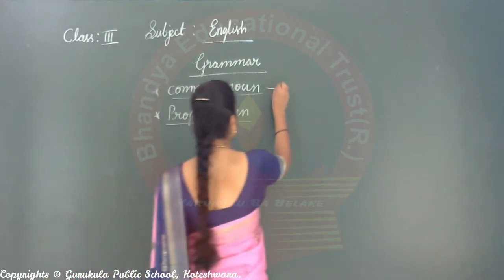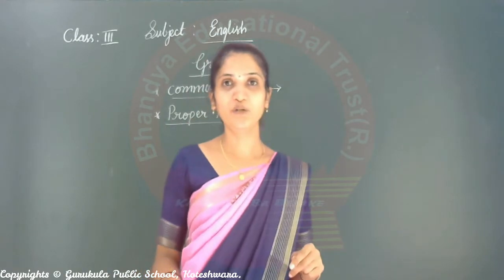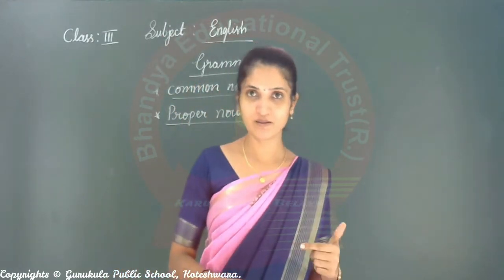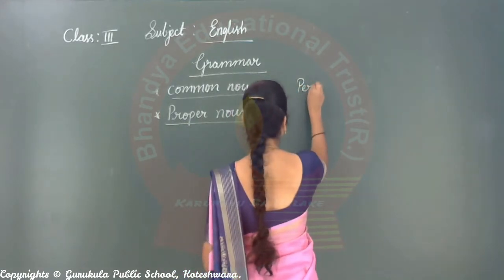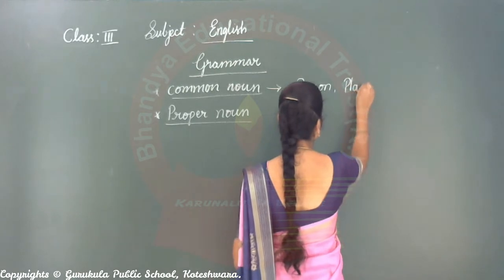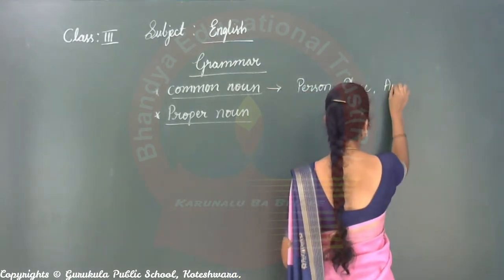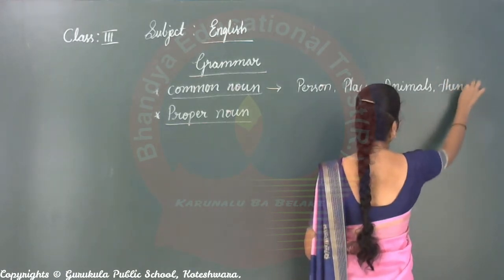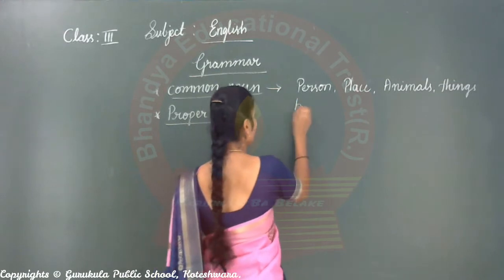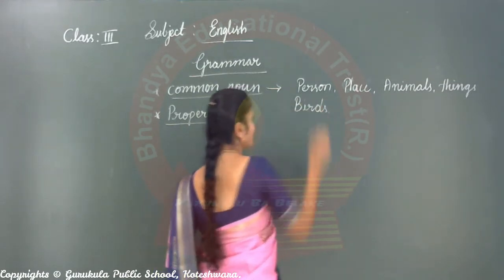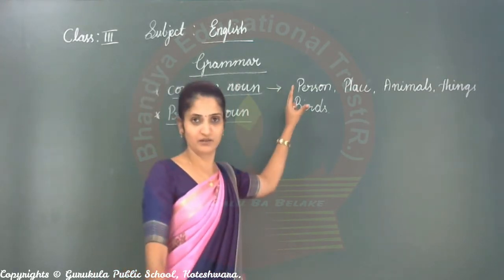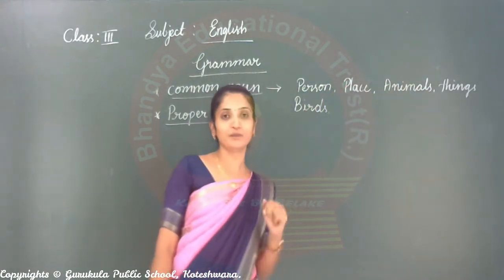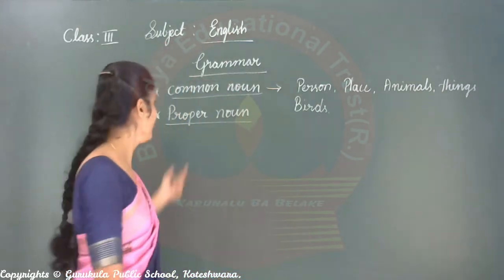What is a common noun? Common noun — already you know that. Common noun is a common name of a person. It refers a common name of a person, place, animals, and words. This is called common noun: common name of a person, common name of a place, common name of an animal, common name of things, and common name of a bird.